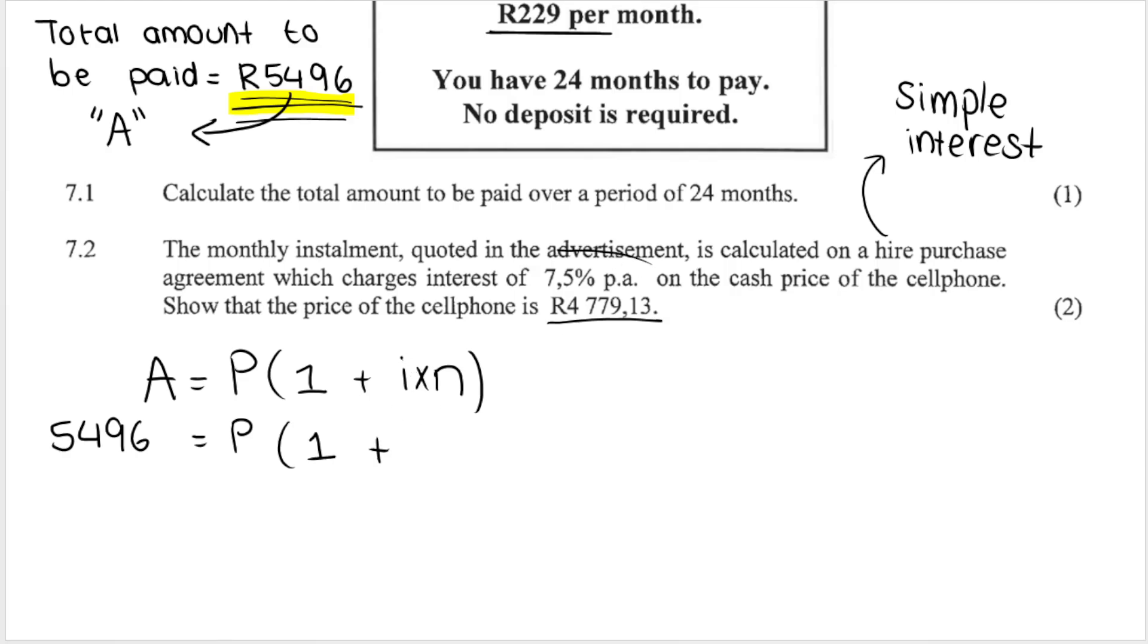A has been given or we calculated in the previous question, R5496. P is what we are looking for. The initial price of the cell phone, the starting price, the principal amount, 1 plus I. I is the interest rate and it's 7.5%. So we go 7.5 divided by 100 because it's percentage. We divide by 100. PA means per annum. And there are how many years in total? Now, N is always number of years. And in this formula N is number of years. We know that it's 24 months. There's 12 months in one year. So 24 divided by 12, that gives me two years. So we're going to say times two.